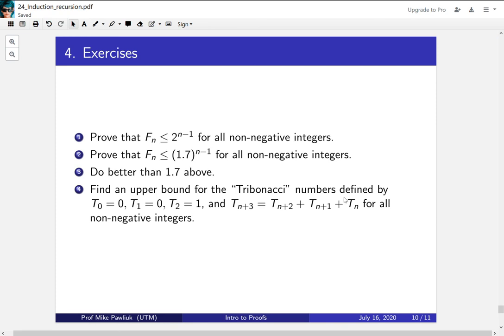Here are some exercises for you. Prove that the nth Fibonacci number is actually less than or equal to 2 to the n minus 1 for all non-negative integers. Then prove that the nth Fibonacci number is less than 1.7 to the n minus 1, so actually improve the bound from 2 to 1.7. Your third exercise is to do even better than 1.7, so find something else that works. If you keep following this thread, you'll discover something very interesting.